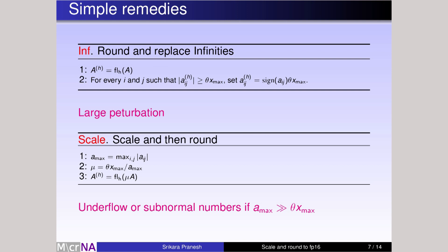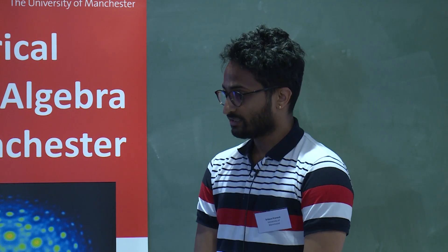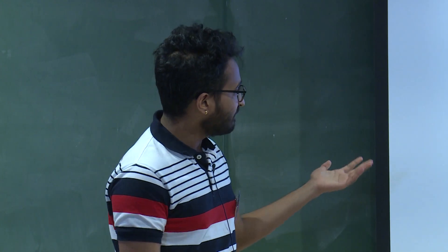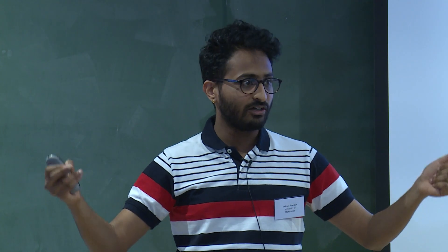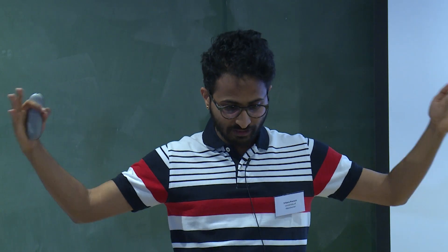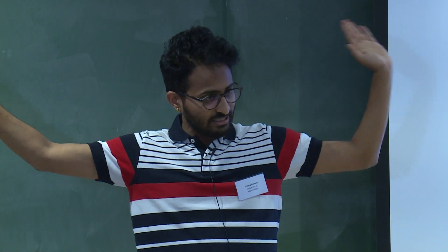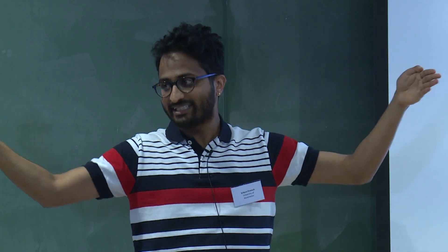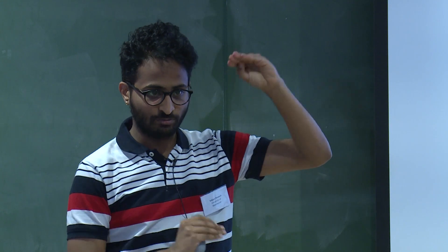A second simple remedy: take the largest element of your matrix, divide the whole matrix by that large number — so all entries are now between minus 1 and 1 — then multiply by X_max to expand the range. Theta again gives headroom for further computation, so all entries lie between minus theta·X_max and plus theta·X_max. The problem is that if the difference between the smallest and largest elements is very large, you can still end up with very small numbers that underflow, making the matrix singular.